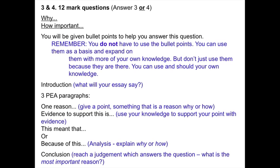Questions 3 and 4 are 12 mark questions and you answer question 3 or 4 — you choose one, you do not answer both. They're normally a 'why' or 'how important' type question. You will be given bullet points to answer this question, but remember, you do not have to use the bullet points. You can completely ignore them if you want and use your own knowledge.